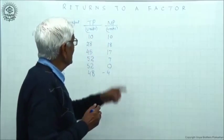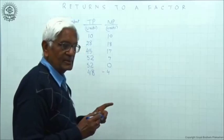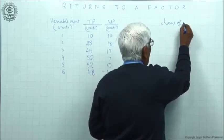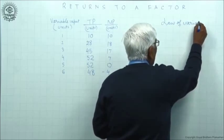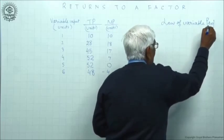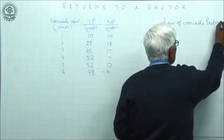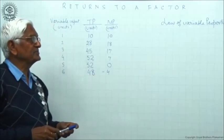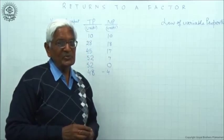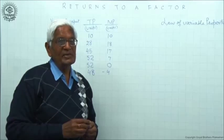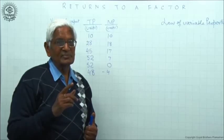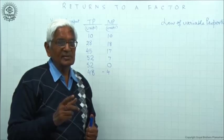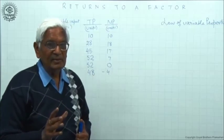The behavior of returns to a factor is summed up in a law called law of variable proportions. Law means general behavior, not a must behavior - generally what is found in practice.